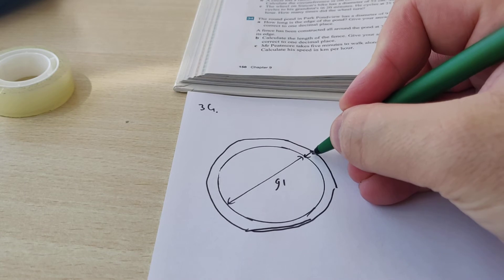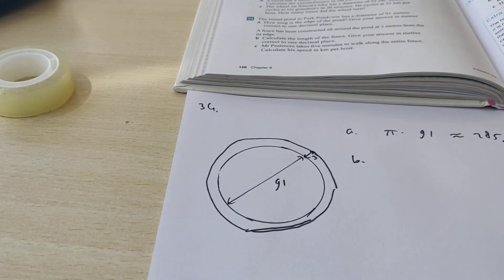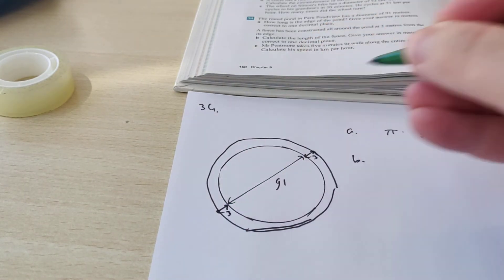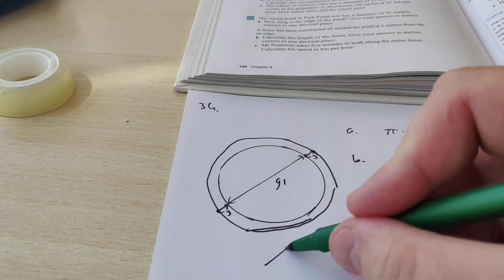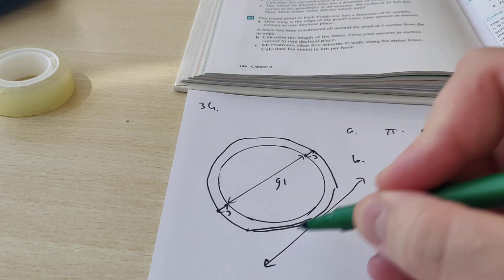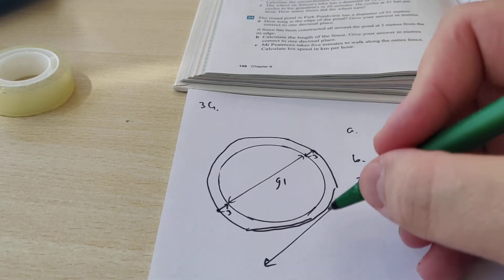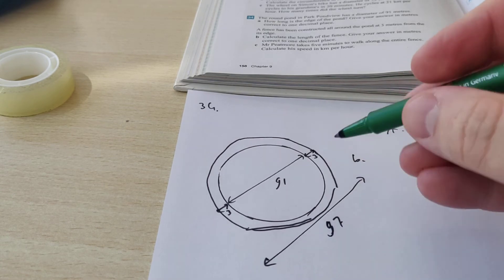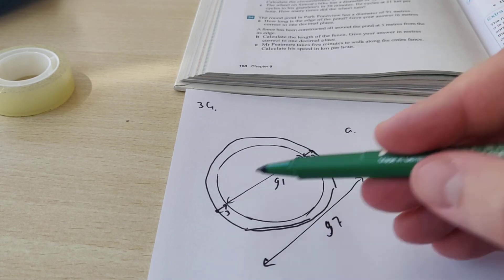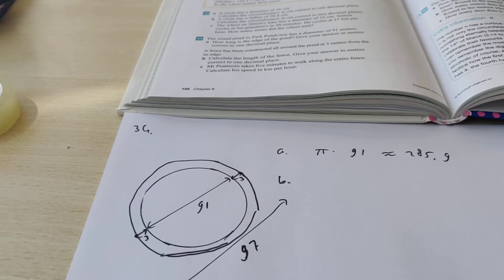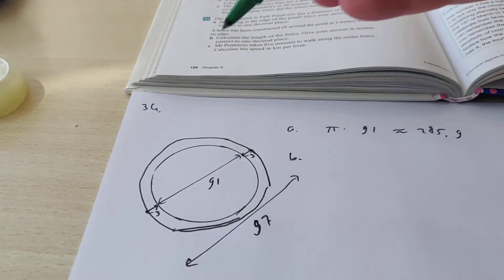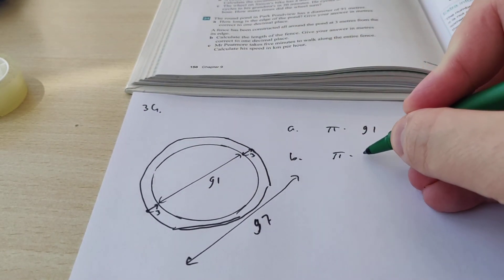The length here is 3 meters. So also on the other side, the length is 3. That means this whole length is not 91, but now it's 97. Because you have 91 meters in the middle, 3 on that side, 3 on that side. To calculate the length of the fence, you have to do π times 97.